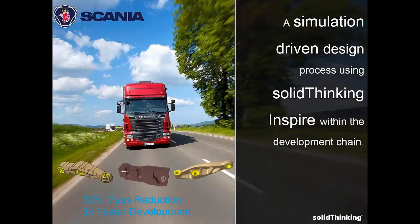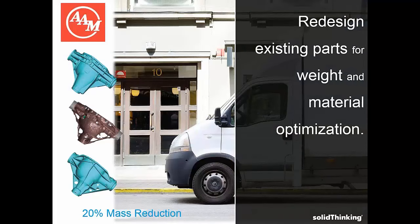The next work is from Scania, a large truck manufacturer. They redesigned their steering arm using Inspire, were able to reduce the mass by 30%, and increased the development time by 3x. This work is done by American Axel, who used Inspire to help generate the lightest possible design that would still meet their strength targets. They were able to reduce around 20% of mass, which was quite significant, and the components were optimized for bending and deflection performance as well.